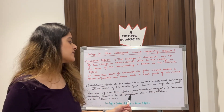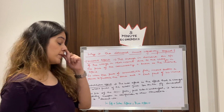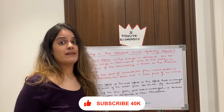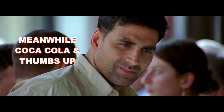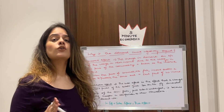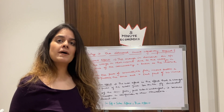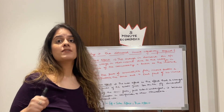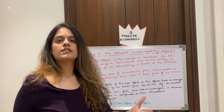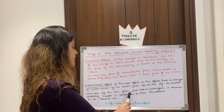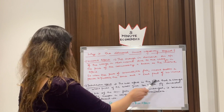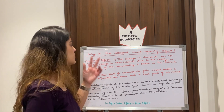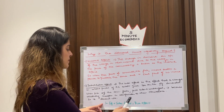The second cause is the substitution effect: the effect that a change in the relative price of a substitute good has on quantity demanded. For example, take Coca-Cola and Thumbs Up. Suppose the price of Thumbs Up falls while Coca-Cola's price stays the same. In comparison, Coca-Cola has now become relatively more expensive and Thumbs Up relatively cheaper, so demand for Thumbs Up rises.